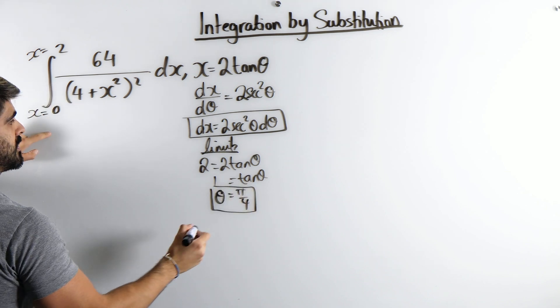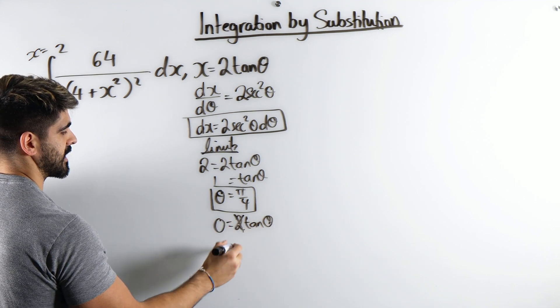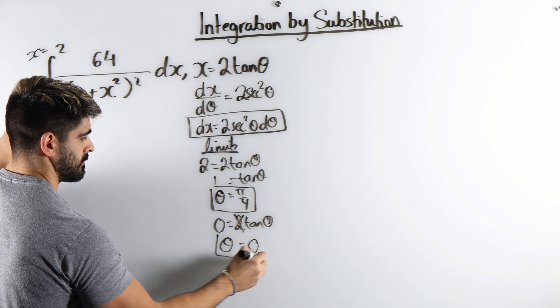Then we have 0. 0 is 2 tan theta divided by 2. Inverse tan of 0 is 0.